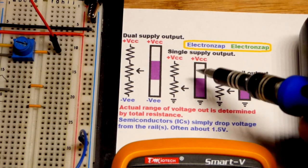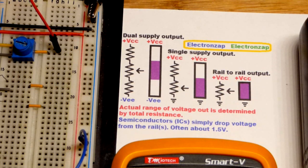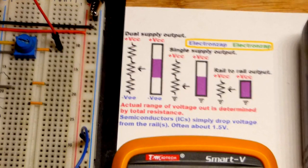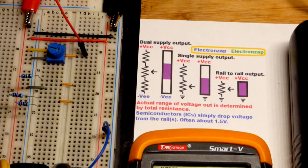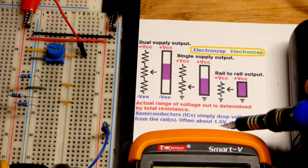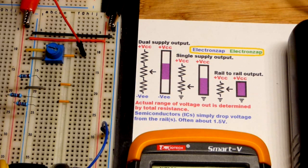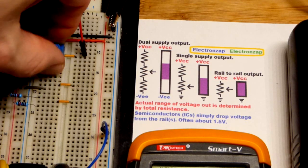They don't go all the way to the positive supply when it comes to the output. But it does go all the way to ground. 0 volts right there. So we're going to simulate that with the trim pot. So again, the 555, probably, if you're using 5 volts, will go up to about 3.5. If you have a 10 volt power supply, probably up to about 8.5, approximately.